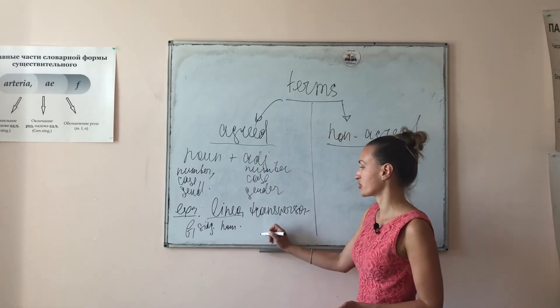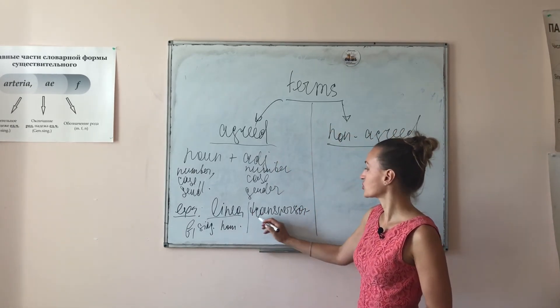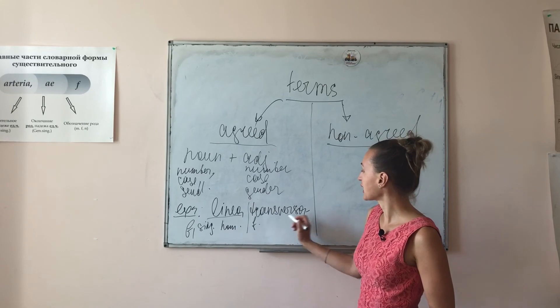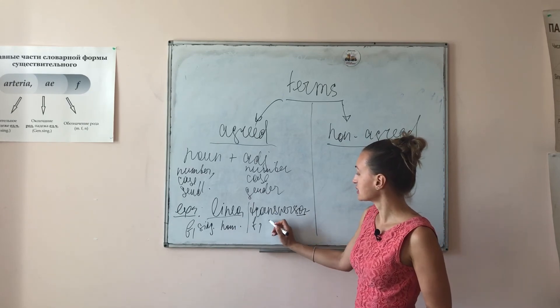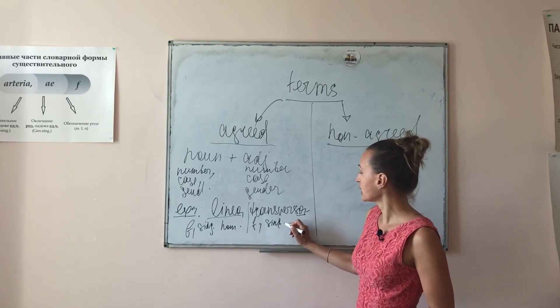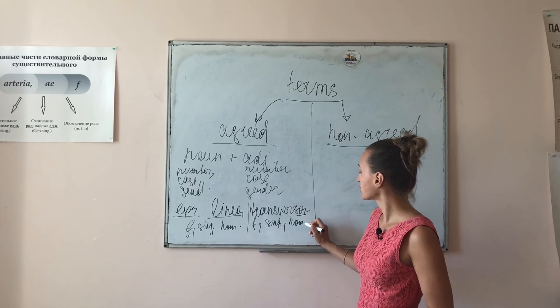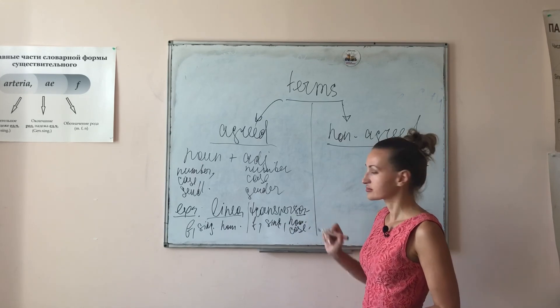Transversa—this is the adjective of the first group, which is also in the feminine gender and has the feminine gender ending. It's singular also and it's also nominative case. Thank you.